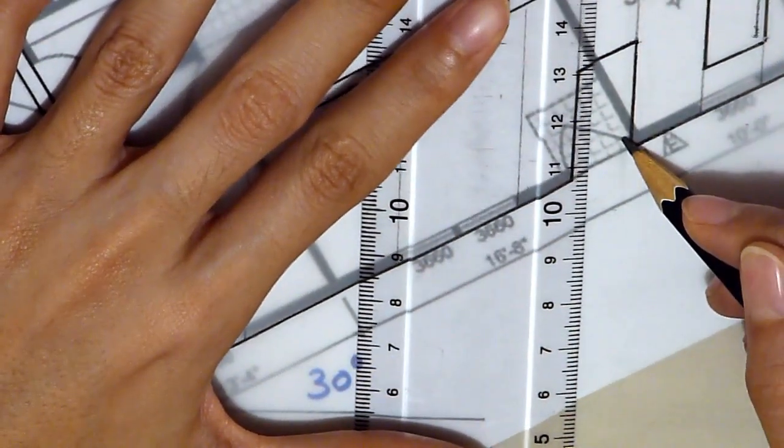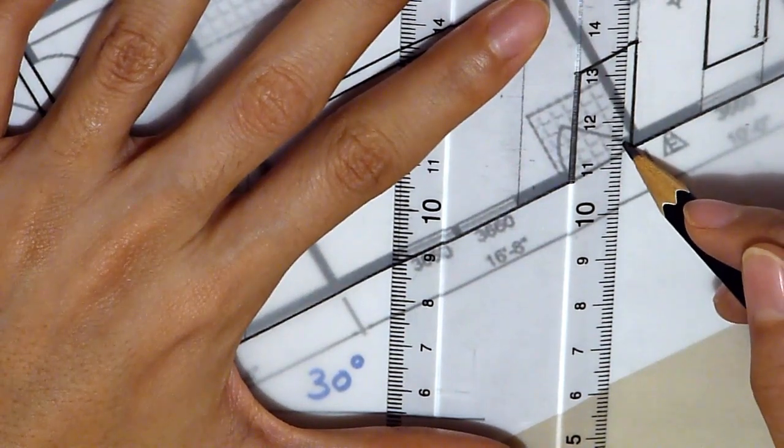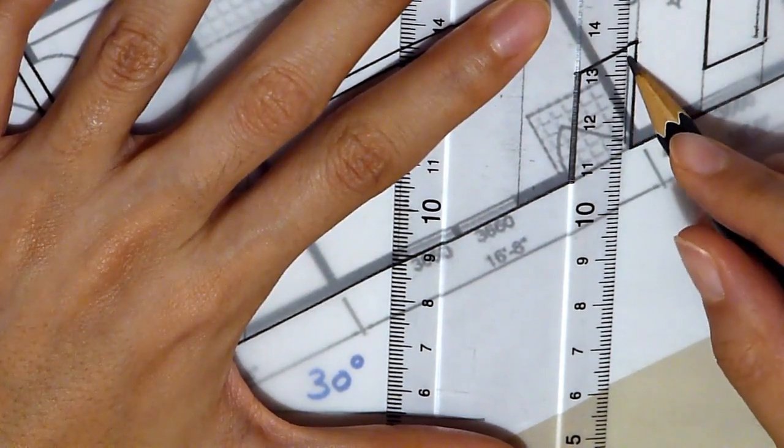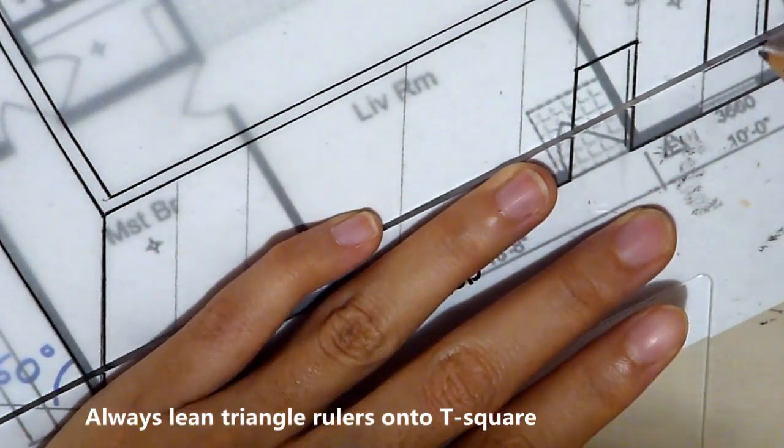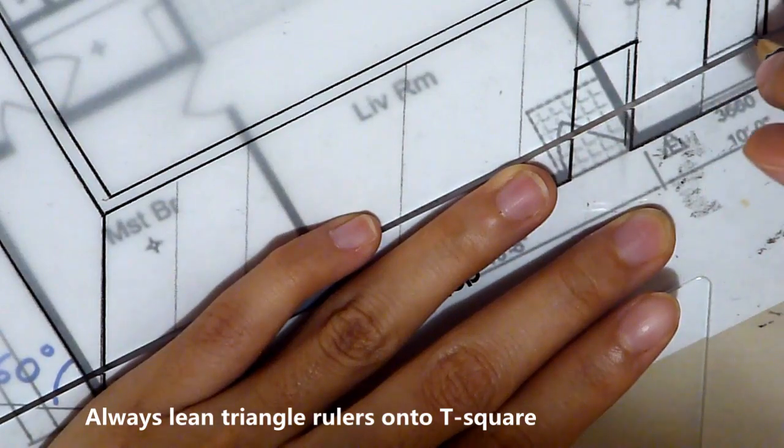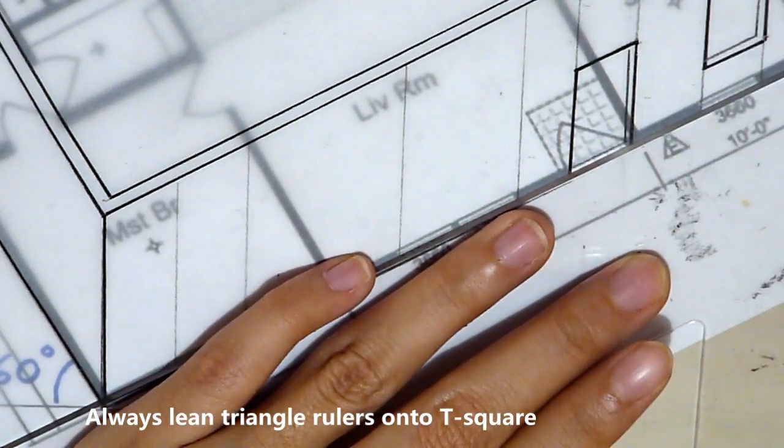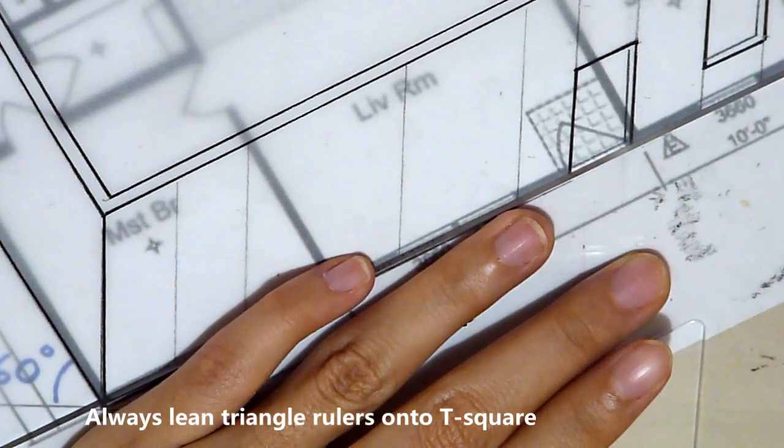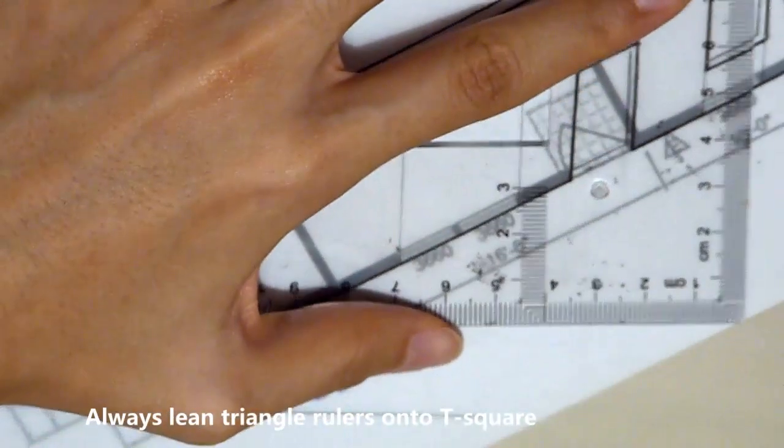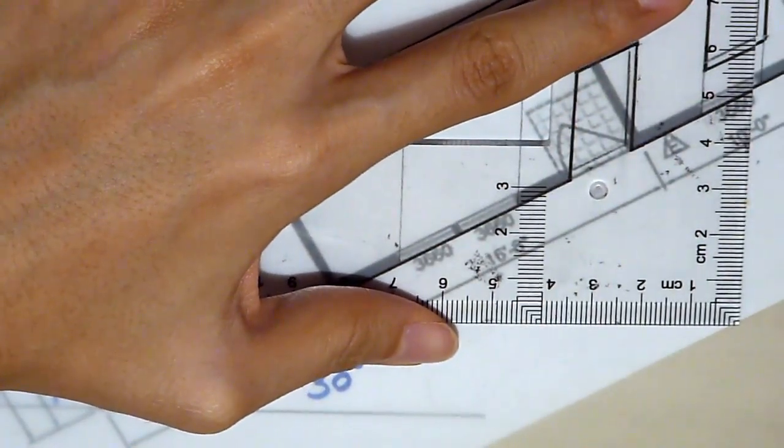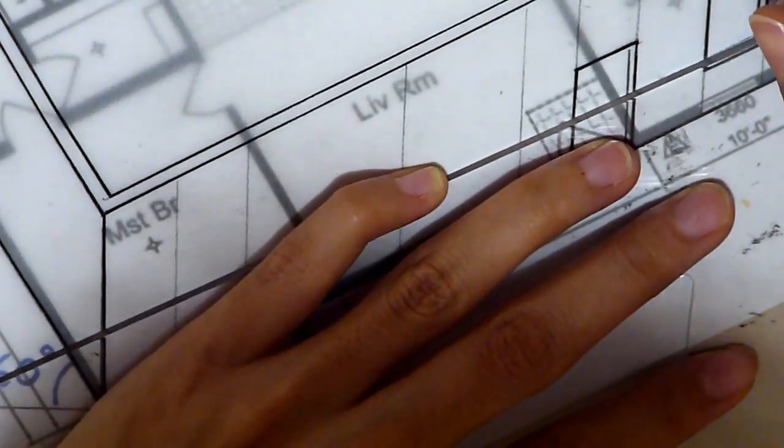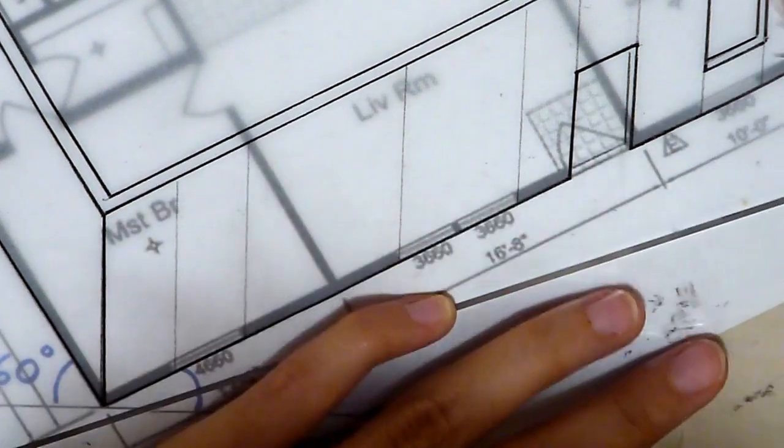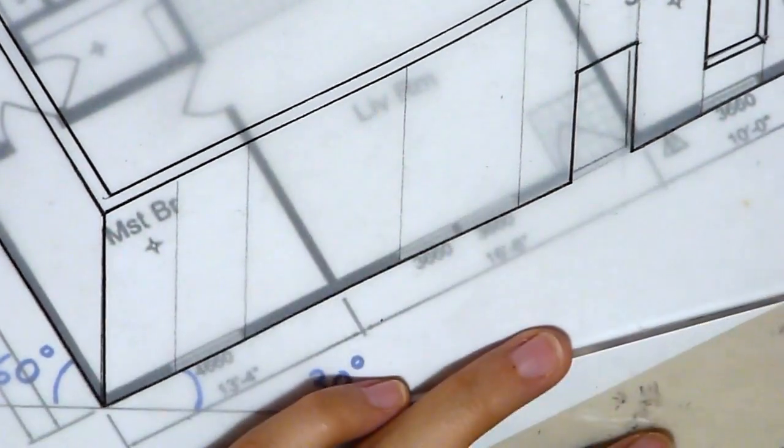The same for the door, I have the door panel on the outer side so I'll just project the door panel line. So I'll just quickly do an outline for your reference. Typically we do the outline much neater after the whole drawing is done.